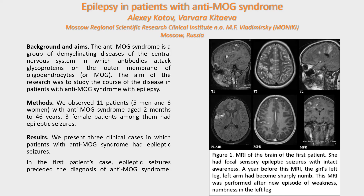In the first patient's case, epileptic seizures preceded the diagnosis of anti-MOG syndrome. In figure 1, you can see the MRI of the brain of the first patient. She had focal sensory epileptic seizures with intact awareness. A year before this MRI, the girl's left leg and left arm had become sharply numb. This MRI was performed after new episodes of weakness and numbness in the left leg.